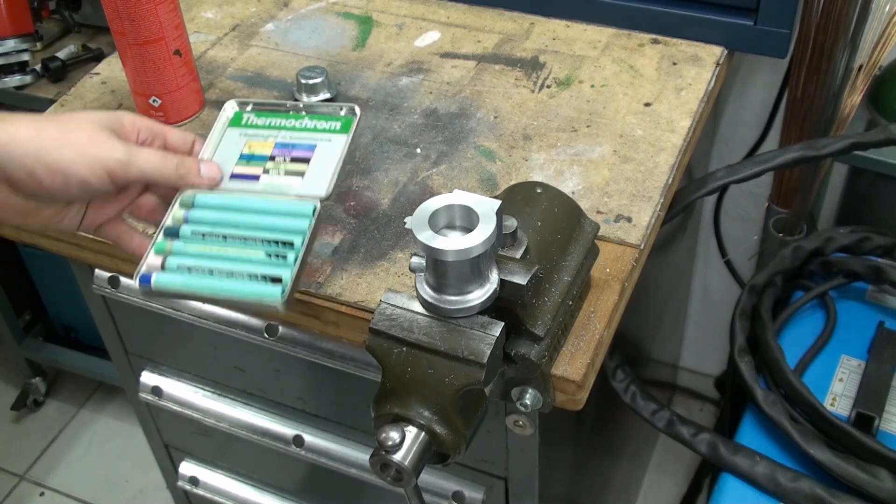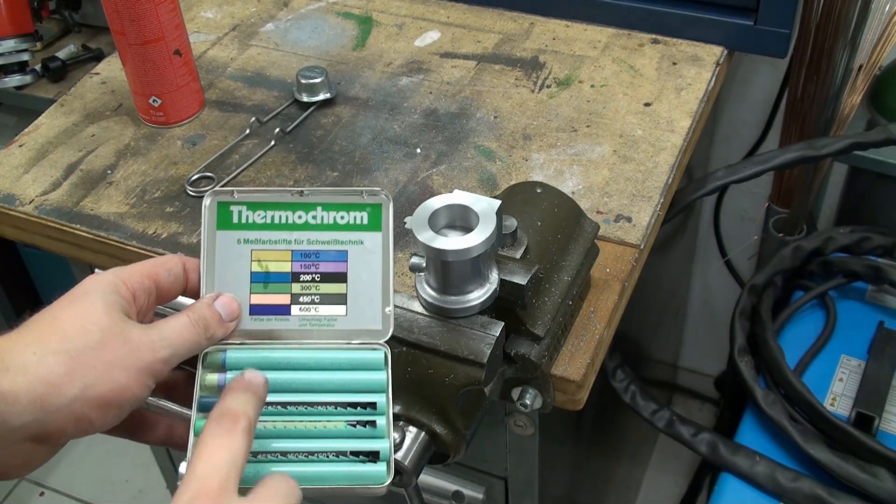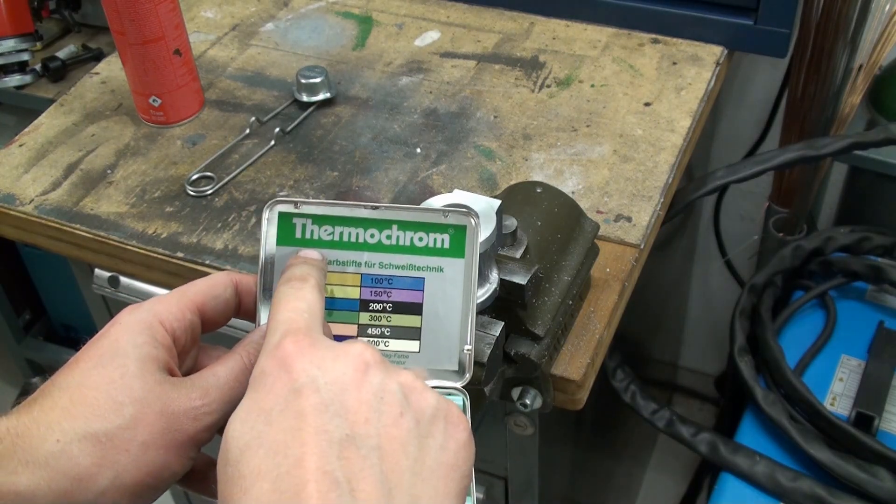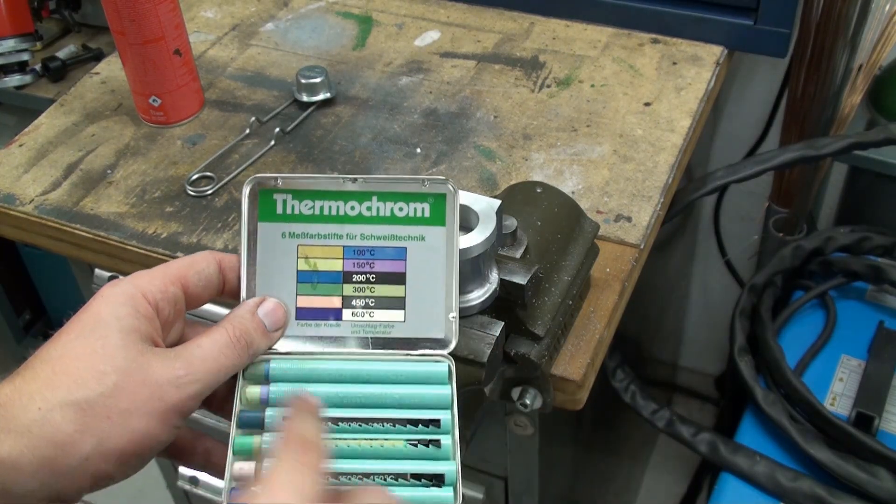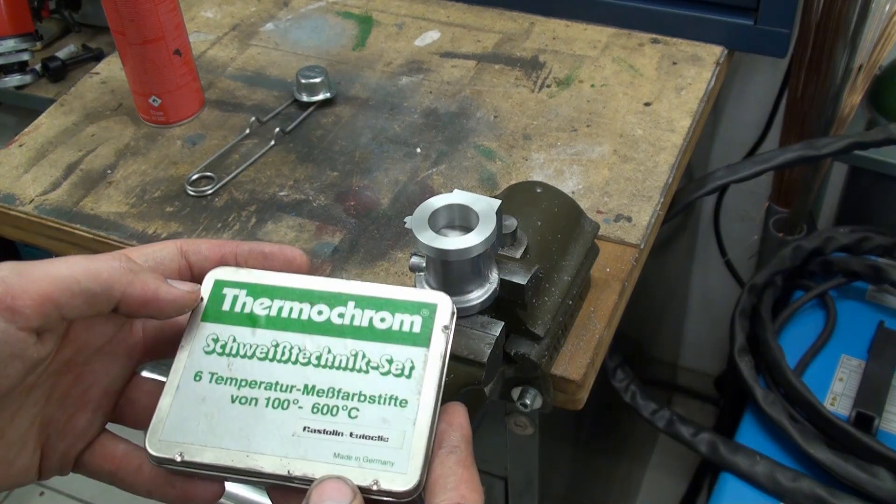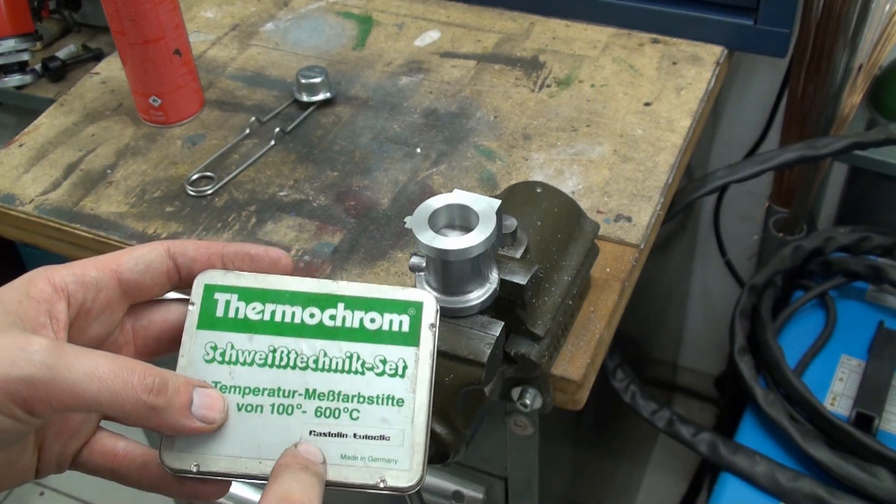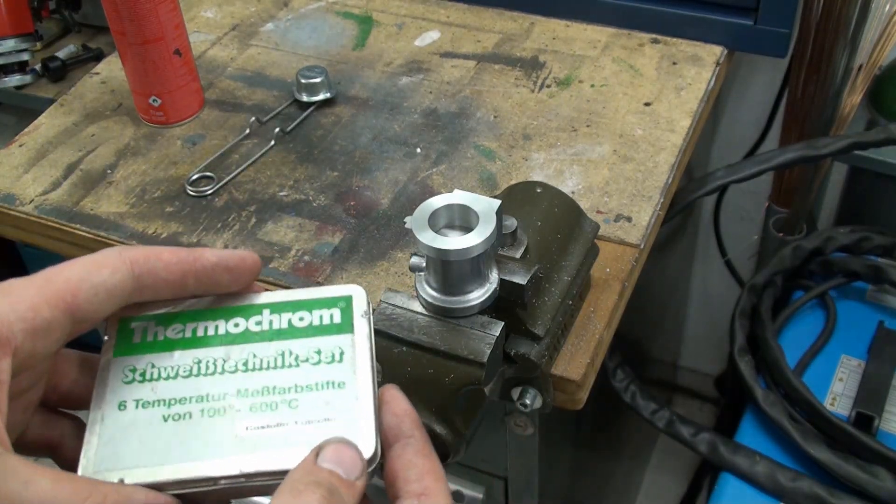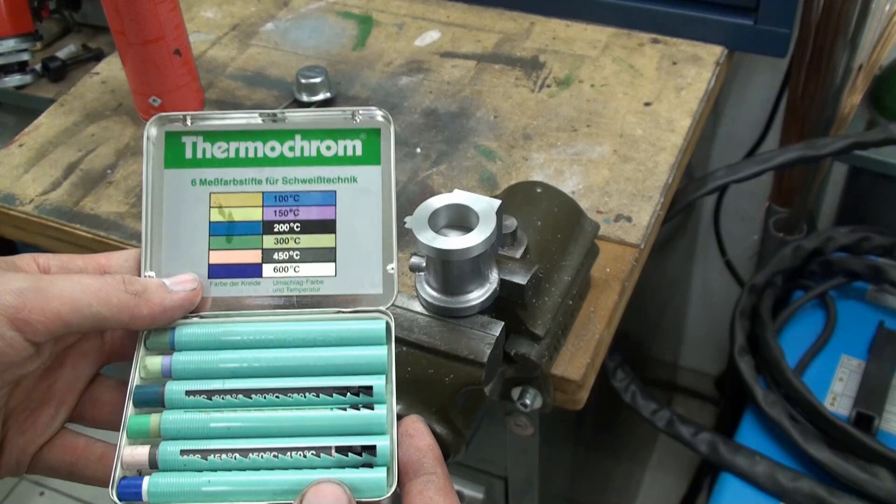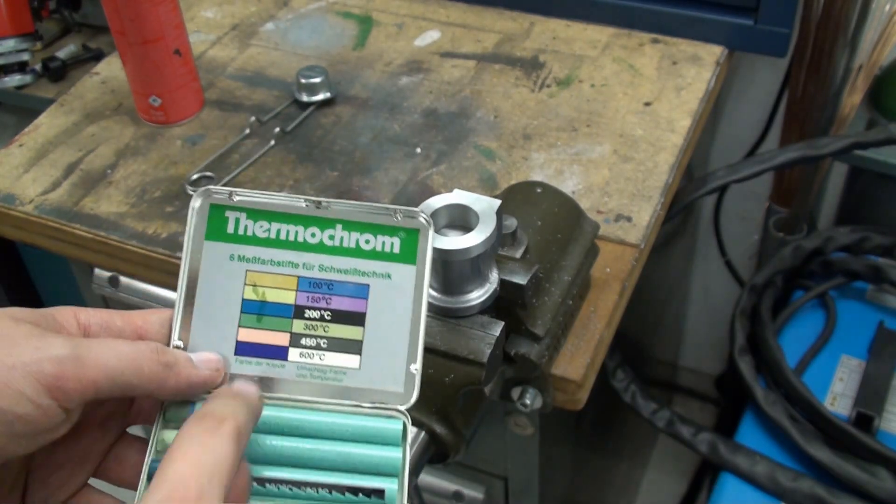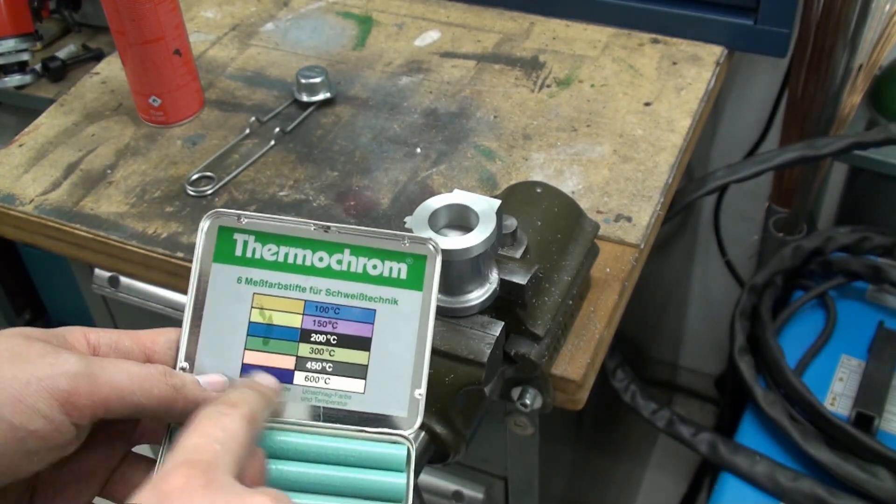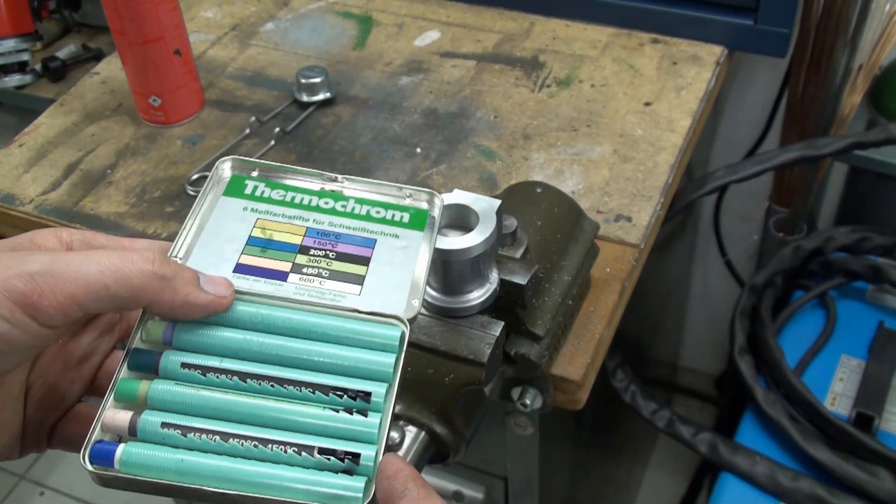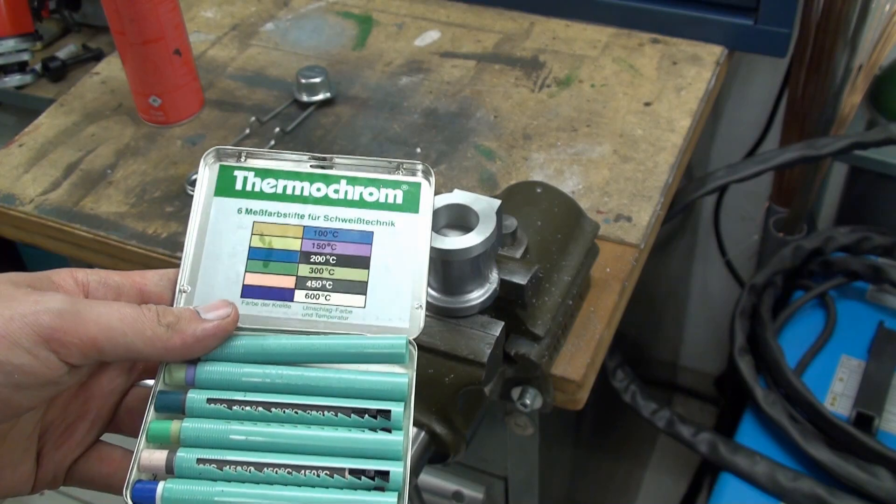I got my temperature crayons out and last time I used these I got a lot of questions. These are Thermochrome made by Castellin, made in Germany, but I'm not sure if these are still produced. They range from 100 degrees C up to 600 degrees C. If you normally buy them they are pretty expensive for some reason.